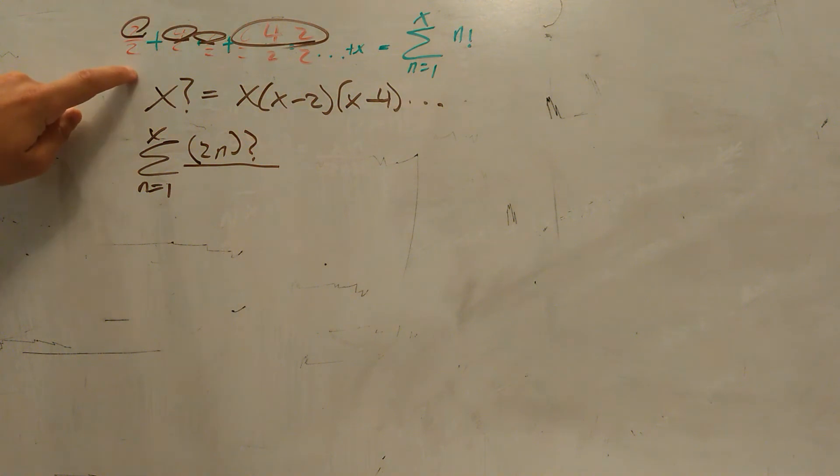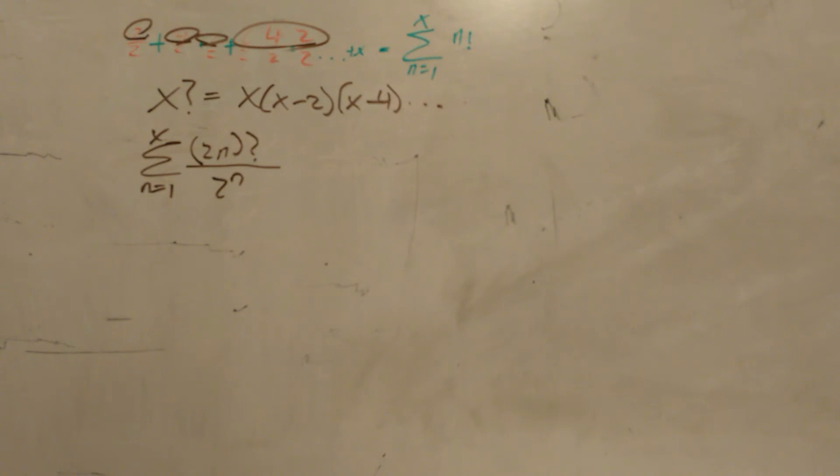Then what we're dividing by is 2 to the nth power because we have 1, 2, 2, 2, 3, 2, etc. Now the question is, how do we find the product of odd numbers because this is in respect to even numbers?